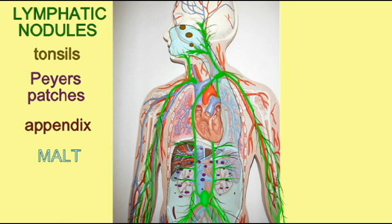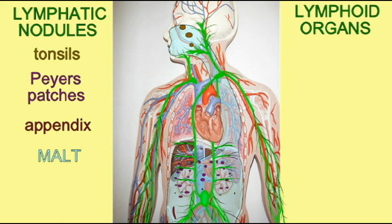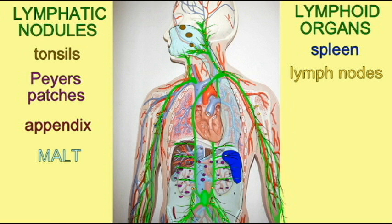The lymphatic system also includes lymphoid organs. These are organs which are wrapped in a capsule and clearly distinct from surrounding tissues. This includes the spleen, which lies underneath the stomach on the left side of the body and is the largest mass of lymphatic tissue in the body, and the lymph nodes, which are distributed throughout the body but are concentrated in certain regions. The spleen and the lymph nodes are also known as secondary lymphatic structures, and a large number of the interactions between microbes and white blood cells occur here.